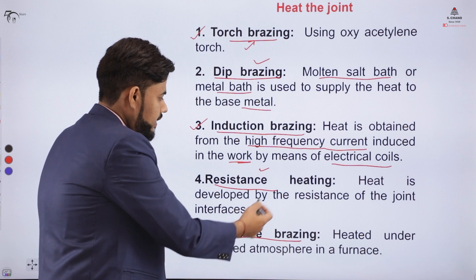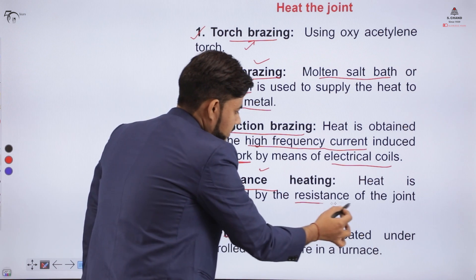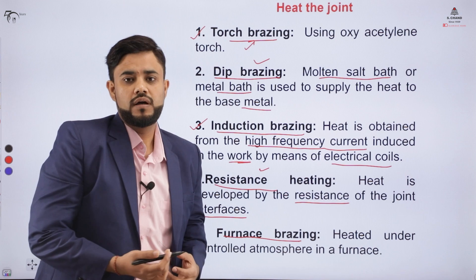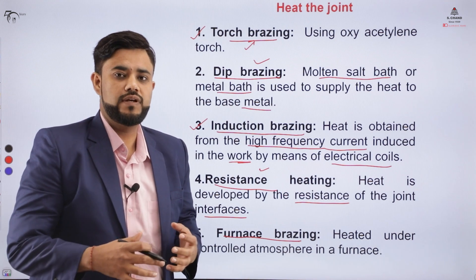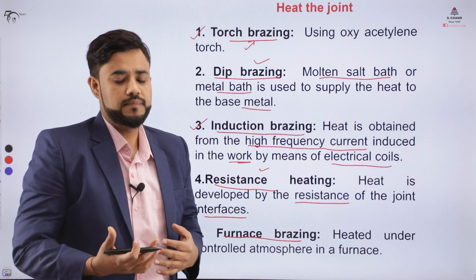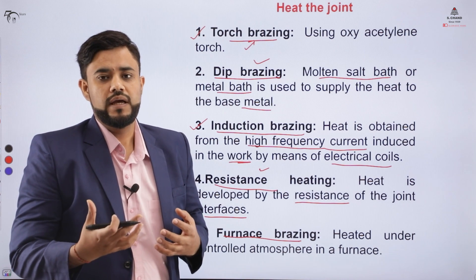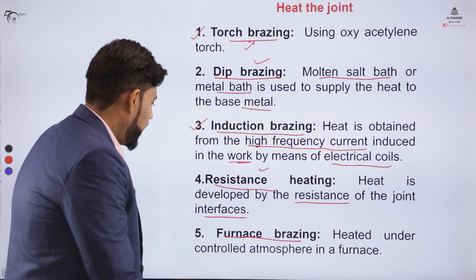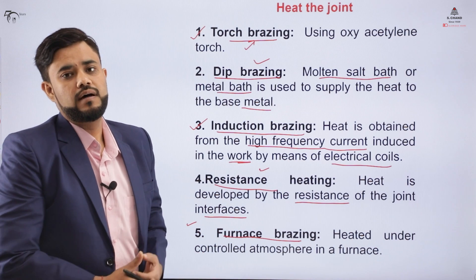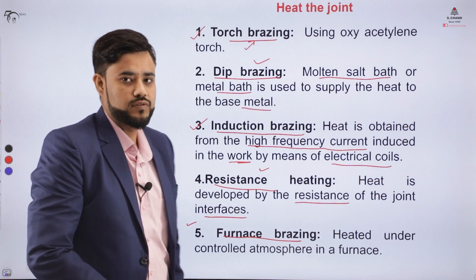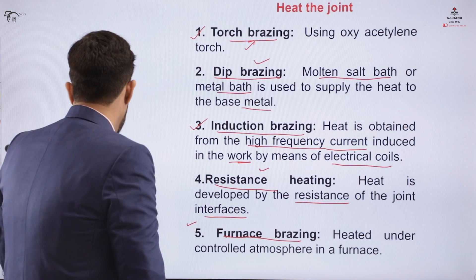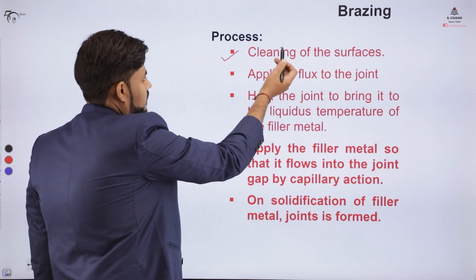In resistance brazing, the resistance concept is used to heat the surfaces. The law H = I²RT applies — current and voltage are supplied so that the workpiece is subjected to heat produced by the resistance action. Lastly, in furnace brazing, the workpiece is heated inside a heated furnace under a controlled atmosphere to prevent contamination with atmospheric gases.